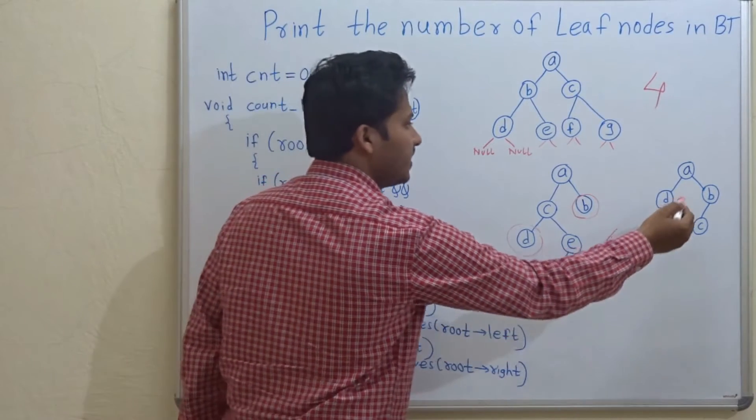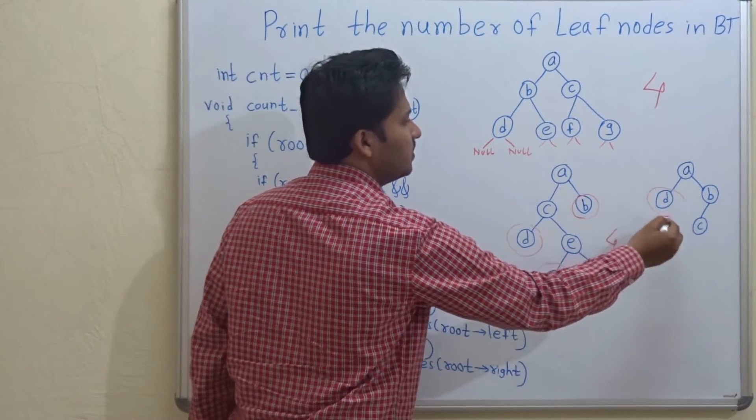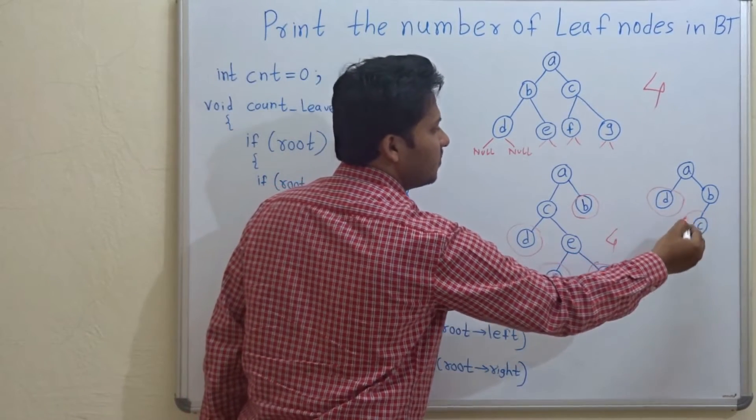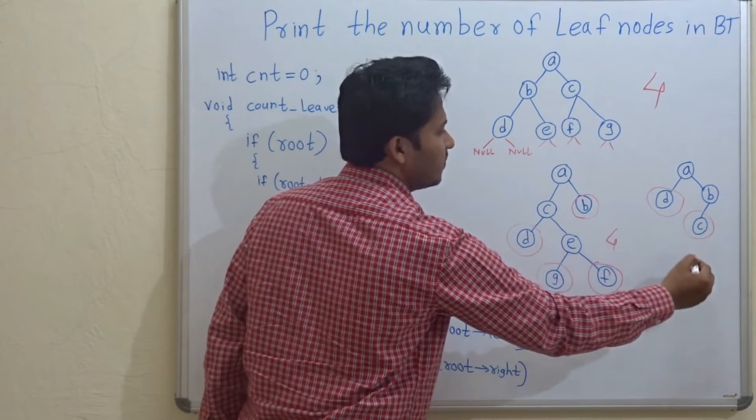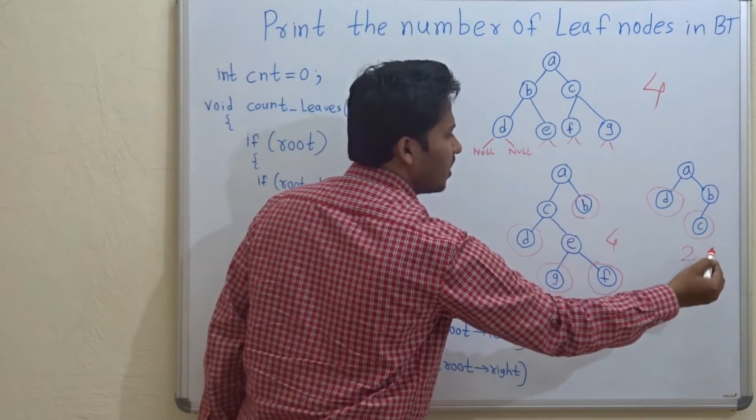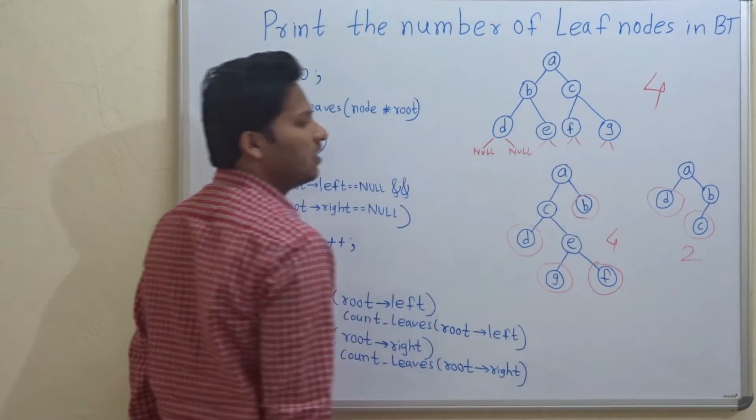And in this example, this is the leaf node and this is the leaf node. So the count is two.